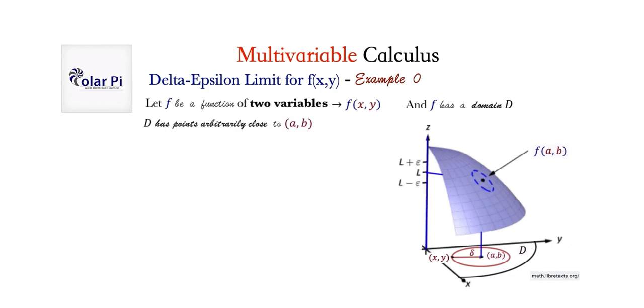And, very important that D has points arbitrarily close to a, b. So, like, there are x comma y pairs all over D, and we need some of those to be arbitrarily close to a, b. Right? So, with this, we say that the limit of f of x as x comma y approaches a, b is L, and we write this, which shouldn't come as a surprise.